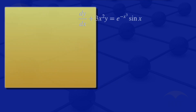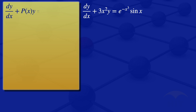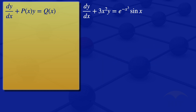What we are given is a linear first order ODE. If we are given a linear first order ODE, which is of the form the derivative of Y with respect to X plus P of X multiplied by Y is equals to Q of X, we can solve this type of ODE using an integrating factor. The integrating factor, which we denote by mu of X, is given by the exponent of the integral of P of X dx.